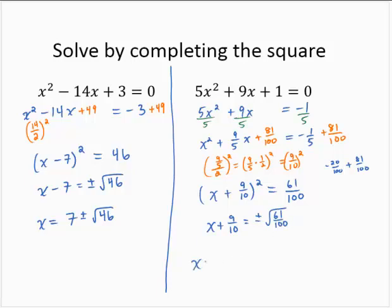So x is equal to negative 9 tenths plus or minus, now the square root of 61 over the square root of 100, that's the same as the square root of 61 over 100. So that's the square root of 61 over 10. And so x is equal to negative 9 plus or minus the square root of 61 over 10.